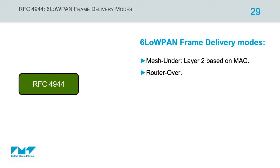The first mode, mesh under, takes place at the 6LoWPAN adaptation layer, where nodes require knowledge of the route at layer 2 based on MAC addresses. The second mode, route over, operates at layer 3 based on IP. Let's go deeper to see these two modes in detail.